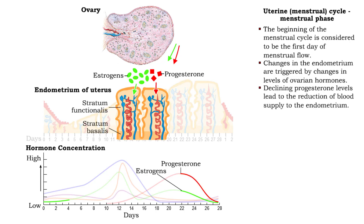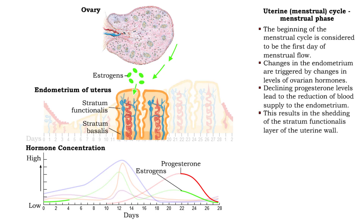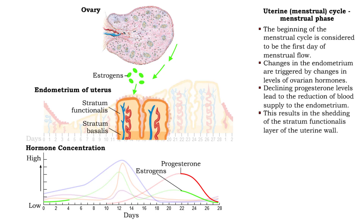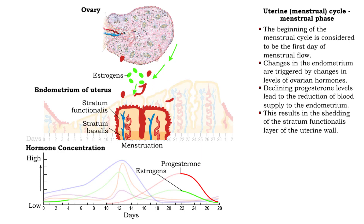Falling levels of progesterone cause the spiral arterioles within the uterine endometrial lining to constrict. As a result, the cells of the stratum functionalis die and slough off.